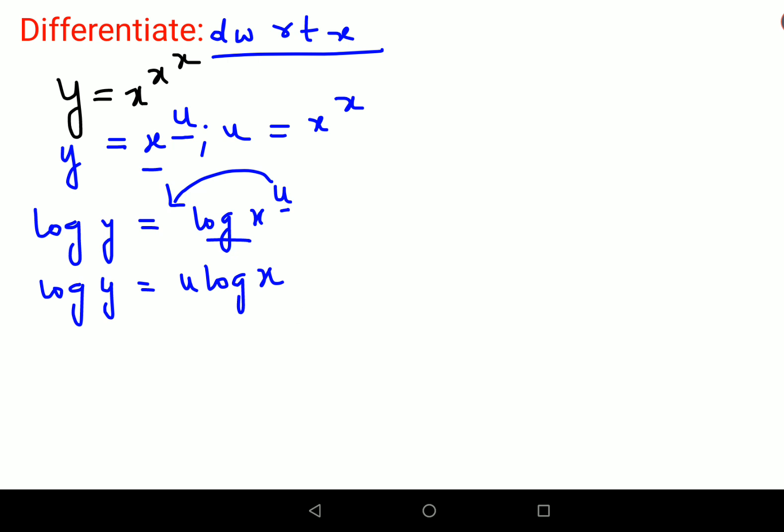This now becomes log y equals to u log x. Now let's start with differentiation. We have 1 upon y - instead of dy/dx I'm writing y', that is absolutely okay. Now here you have variable into a variable, so you're going to apply the product rule: u v' plus v u'. Using the same logic, I will keep u as it is and differentiation of log x is 1 upon x, plus log x as it is and then differentiation of u, that is u'.